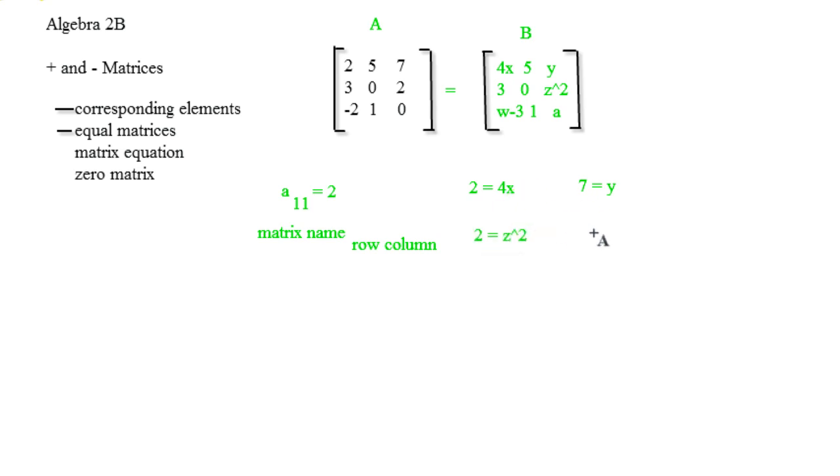And I just set that up. The next one would be negative 2 equals w minus 3. And then finally we would get 0 equals a. Something pretty simple like that.